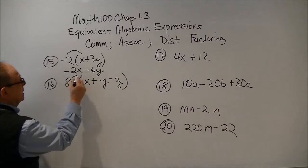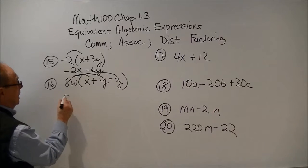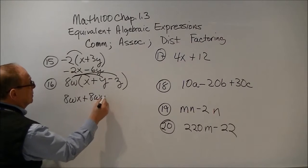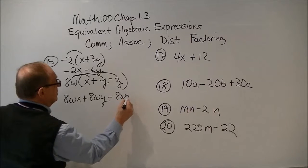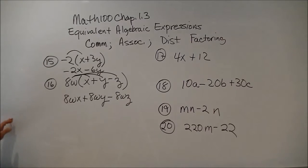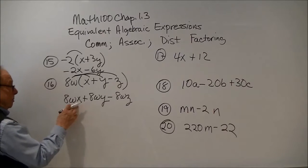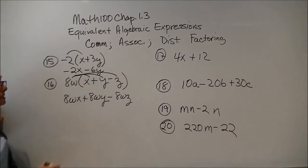Again, we're going to distribute that 8w. So 8wx plus 8wy minus 8wz. Now notice, for each of these, after we distribute, by reversing it through factoring, we would get what we have on top. So these two processes often go together.